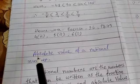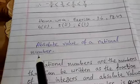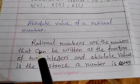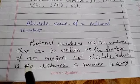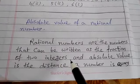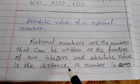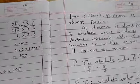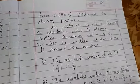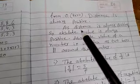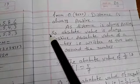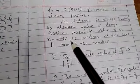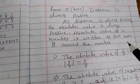Absolute value of a rational number: Rational numbers are the numbers that can be written as the fraction of two integers. Absolute value is the distance of a number from zero. Distance is always positive, so absolute value is always positive.